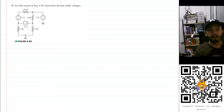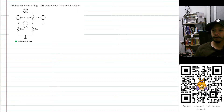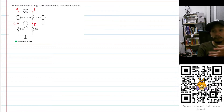Hello, my name is RD and we are going to solve problem 20 from the book. The question is: for the circuit of figure 4.50, determine all four nodal voltages. Let's name this node as node A, this node as node B, this one as node C, and this one as node T (D). So we will have four nodes here.